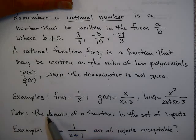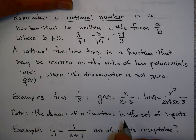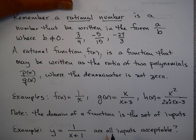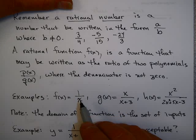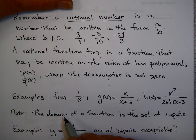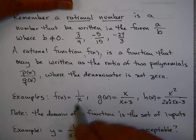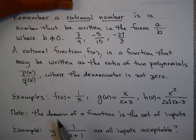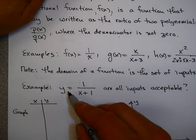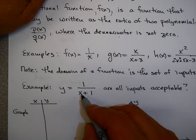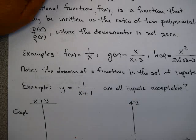You might remember from Math 93 that the domain of a function is the set of all inputs. Up to now, we haven't really cared too much about the domain, because you could always put any number in. But that's not going to be true anymore. Let's take a look at this rational function: y equals 1 over x plus 1.